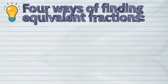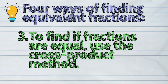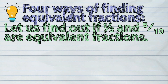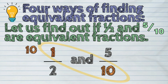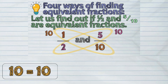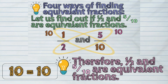Let us now proceed to the third way. To find if fractions are equal, use the cross-product method. Example: let us find out if one-half and five-tenths are equivalent fractions. Start by multiplying the numerator one and the denominator ten — one times ten is ten. Next, multiply the numerator five and the denominator two — five times two is ten. The products of this method are both ten. Therefore, one-half and five-tenths are equivalent fractions.